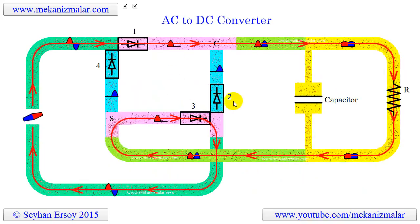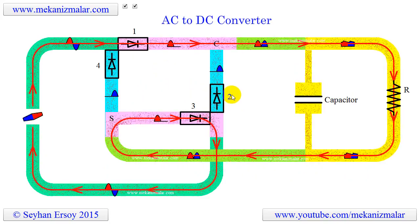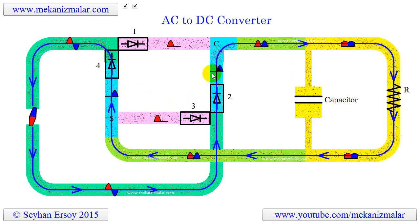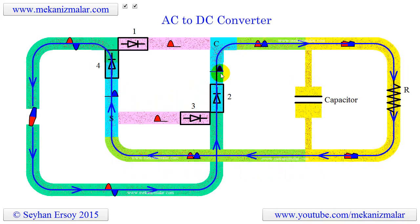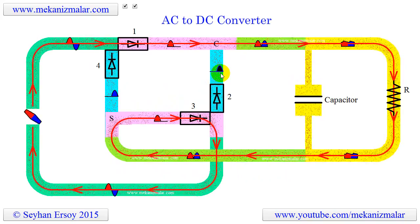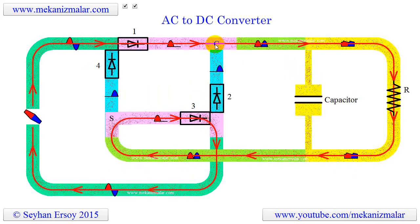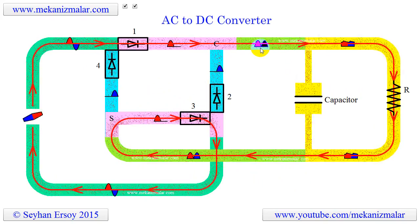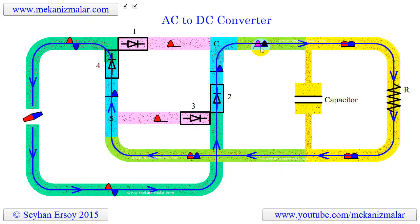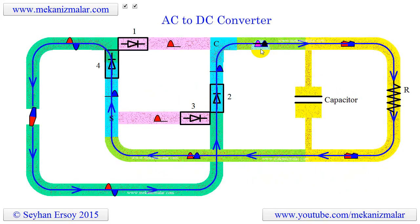Diode 2 shown here only allows the blue current to pass and does not allow the red current to pass. This is a DC current with one hump and without any current in the first half of the cycle. Notice that this is an intermittent DC current. This waveform is shown by this current icon here. The current passing from diode 1 and 2 is combined at point C. This is a DC current with double humps. This current is continuous but makes two stops in each cycle. Also, current magnitude changes continuously. This waveform is shown by this icon here.